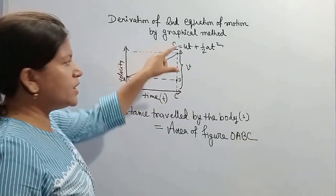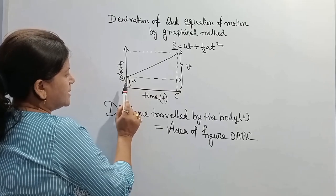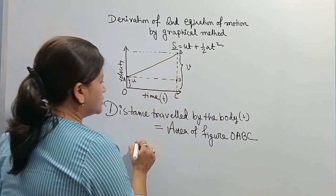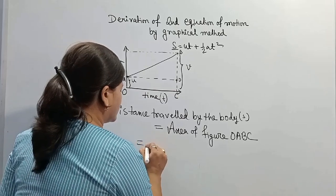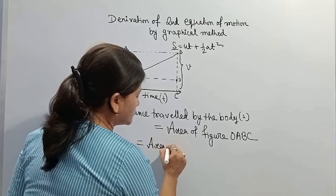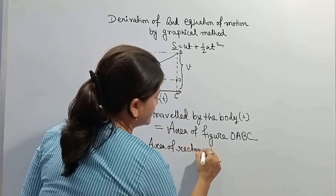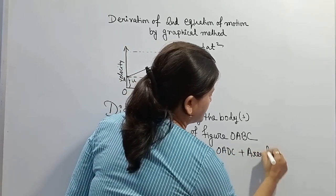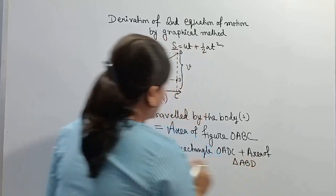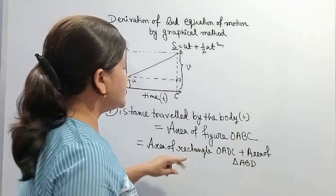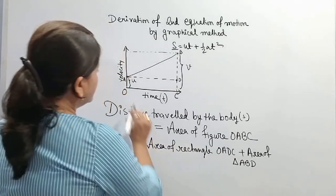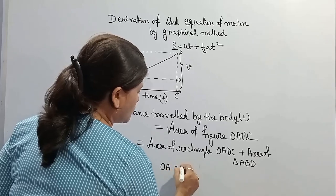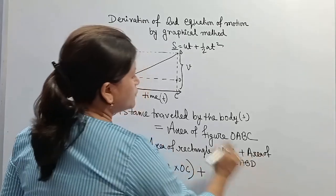Now this figure OABC consists of rectangle OADC and triangle ABD. So area of OABC is equal to area of rectangle OADC plus area of triangle ABD. Area of rectangle OADC is OA into OC.